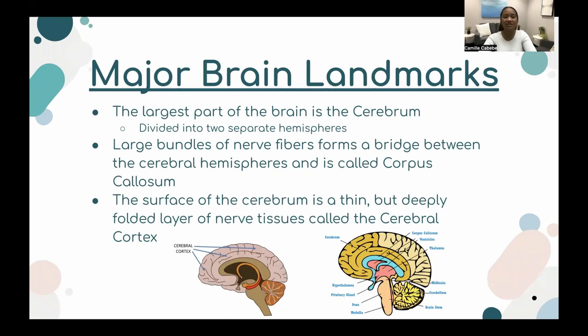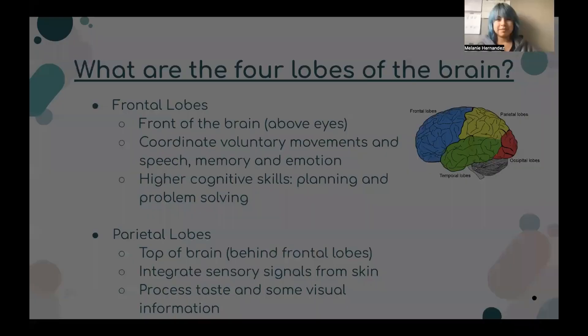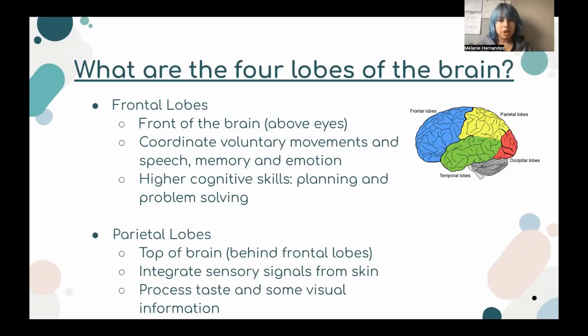The cortex is divided into the four lobes of the brain. The four lobes are: the frontal lobe, the parietal lobe, the occipital lobe, and the temporal lobe.